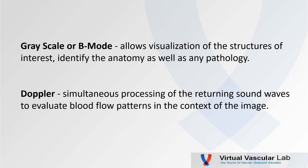When we do duplex imaging, we're really using two different modes. We have grayscale or B-mode, which allows us to visualize the structures of interest, identify the anatomy, as well as any pathology. We also use Doppler, which is a simultaneous processing of the returning sound waves that allows us to evaluate blood flow patterns. This is particularly useful because it's performed in the context of the image, and it allows us to calculate blood flow velocity, which forms the basis of our disease severity classification.